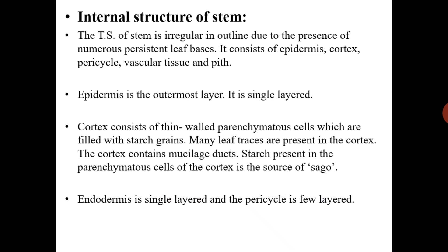The transverse section (TS) of a stem is irregular in outline due to the presence of numerous persistent leaf bases. It consists of epidermis, cortex, pericycle, vascular tissues, and pith.